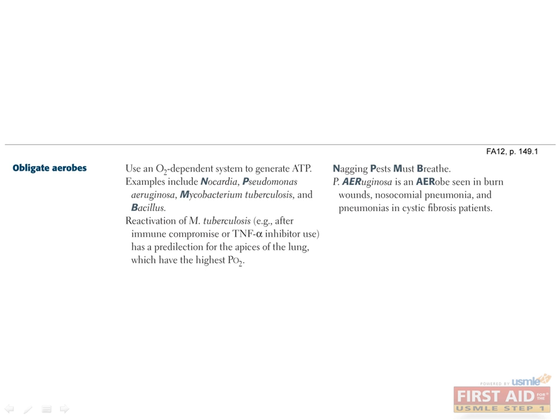Obligate aerobes are organisms that require oxygen in order to survive. These organisms seek to infect areas such as the respiratory tract, where there is plenty of oxygen. You can use the mnemonic 'Nagging Pest Must Breathe' to remember them: Nocardia, Pseudomonas, Mycobacterium, and Bacillus.